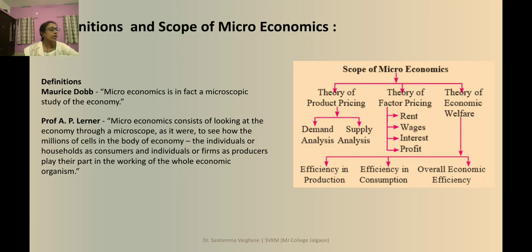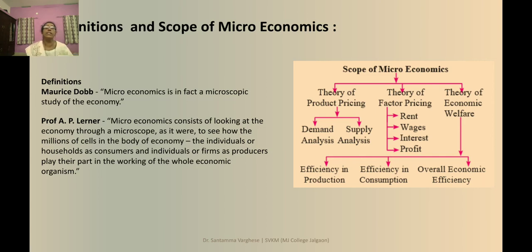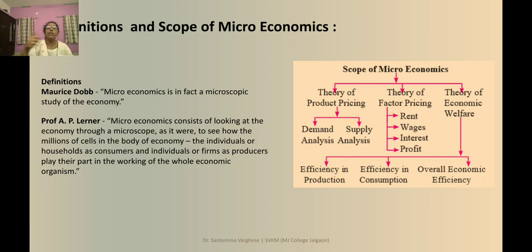Next is the theory of factor pricing. As we studied in 11th standard, the factors of production in microeconomics are land, labor, capital, and organization (entrepreneur). As seen in the chart: rent is the reward for land, wages is the reward for labor, interest is the reward for capital, and profit is the reward for the entrepreneur. This price given to factors of production is called theory of factor pricing.